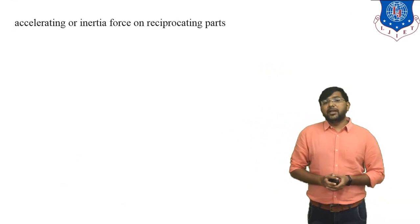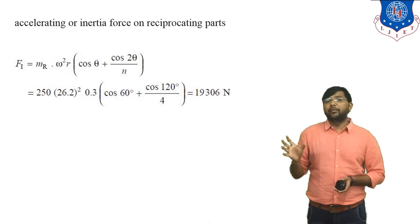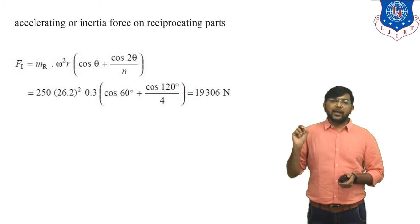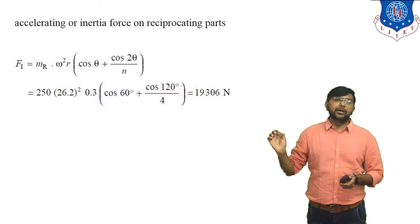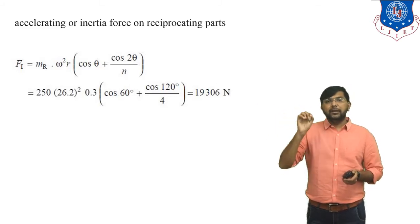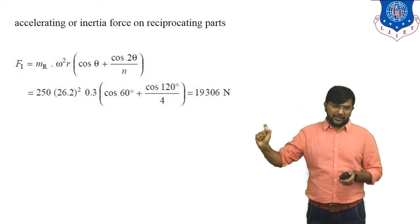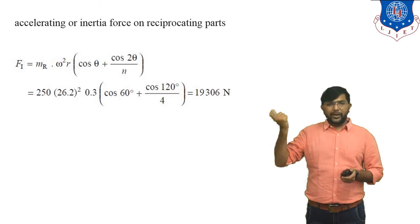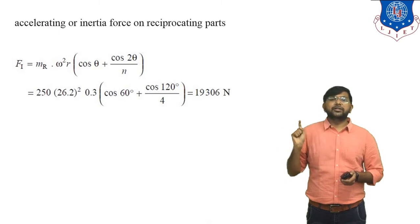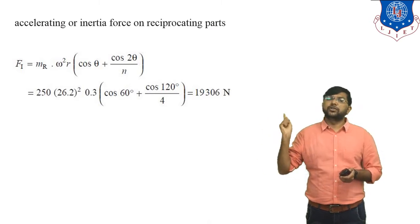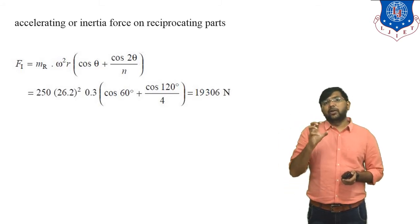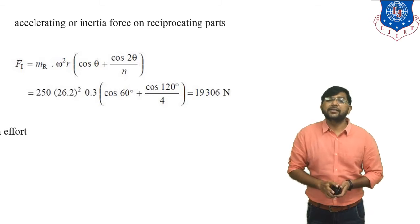Now we calculate the accelerating or inertia force of the reciprocating part: F_i = M_R × ω² × R × (cos θ + cos 2θ / n). Substituting: M_R = 250 kg, ω = 26.2 rad/s, R = 0.3 m, cos 60° + cos 120° / 4. Calculating all values gives F_i = 19,306 N.